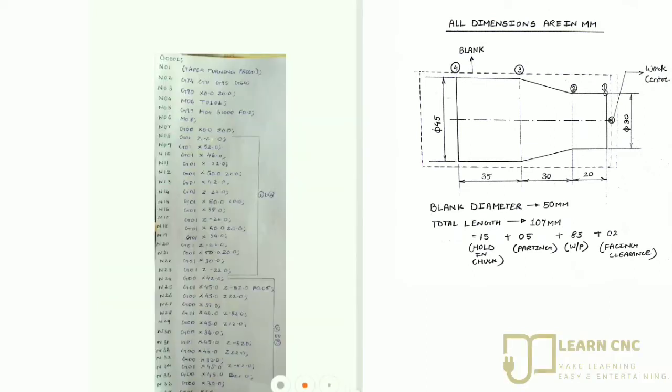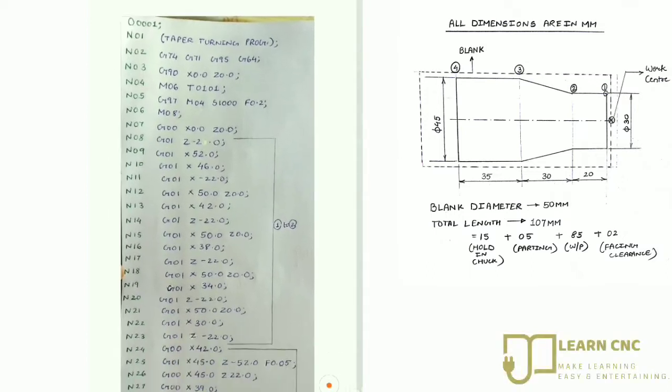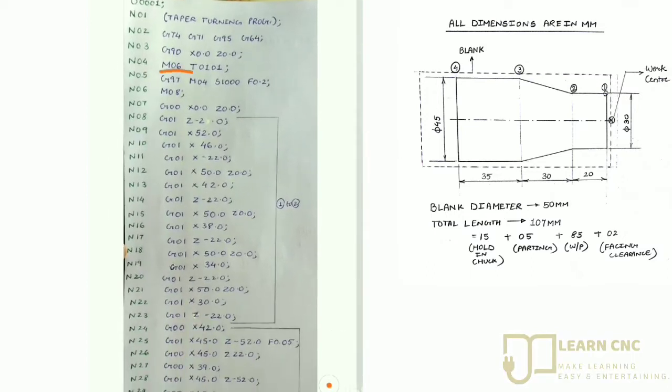Then M06 means tool change and T0101. Here in the turning program, we write tool number in this format, where first 01 is tool number and the second 01 is offset number. So this is the format in the turning programs.